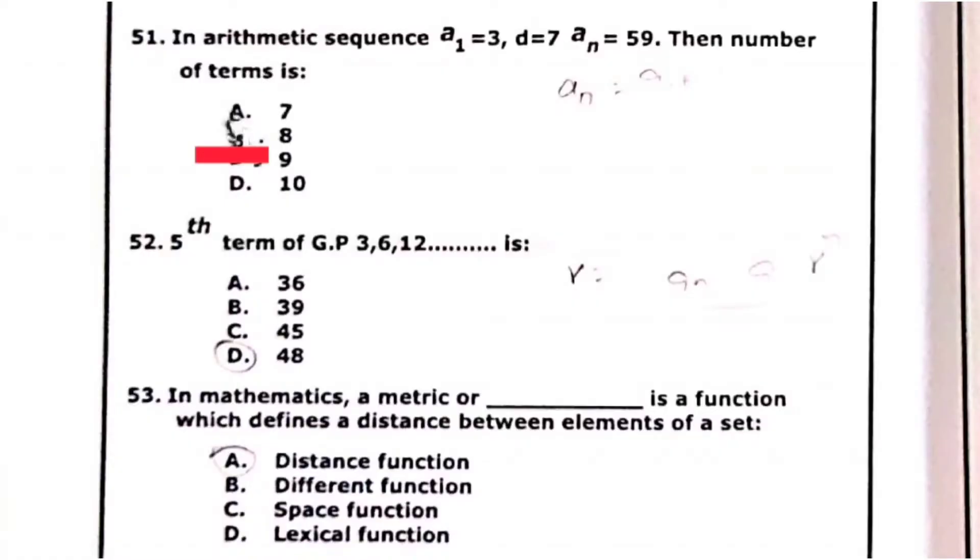Today I will discuss from question 51 to 75. Our question 51 is in arithmetic sequence A1 equals 3, D is 7, and AN is 59.